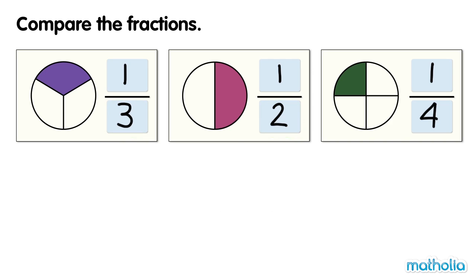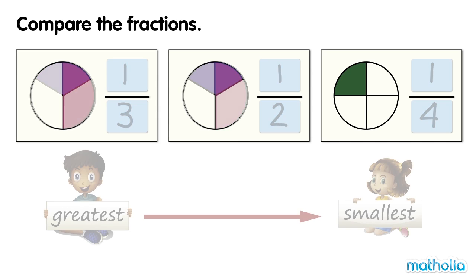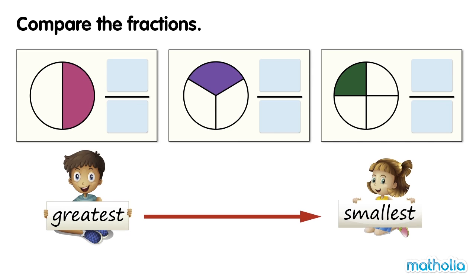Let's arrange the fractions from the greatest to the smallest. From the greatest to the smallest, the fractions are one half, one third, one quarter.